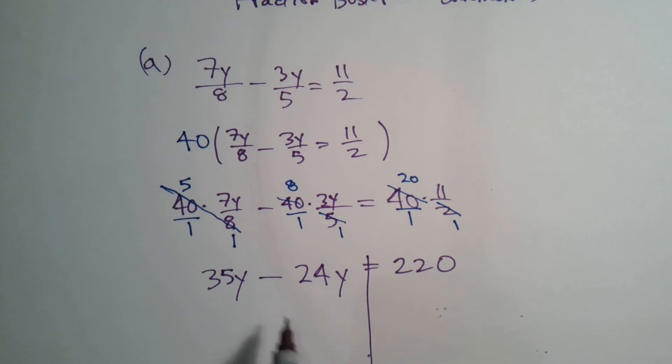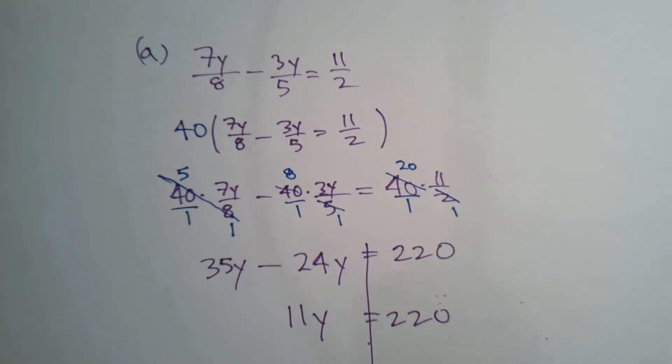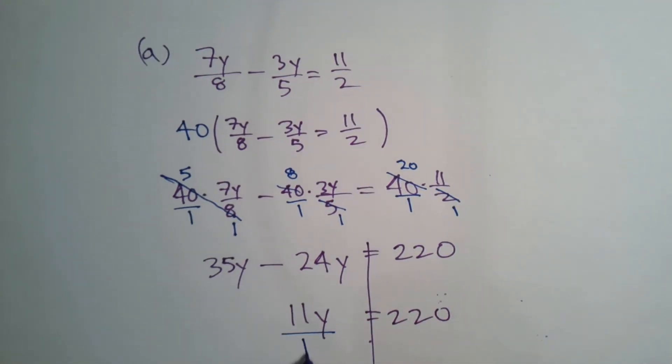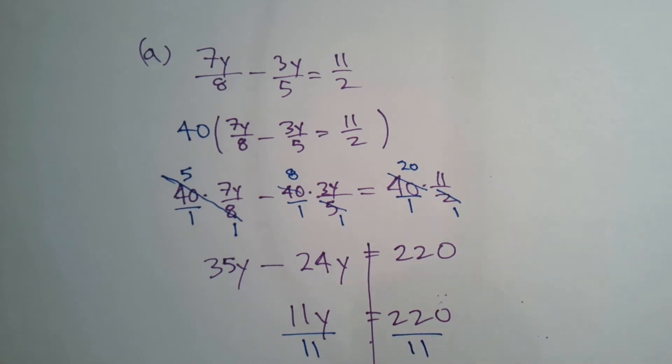The same step: simplify this side because I got to get my y by itself. 35 minus 24 is 11, so 11y equals 220. Then do the inverse operation which is division in this case. Divide by 11. My final answer: y is equal to 20.